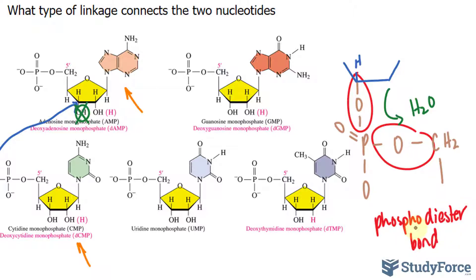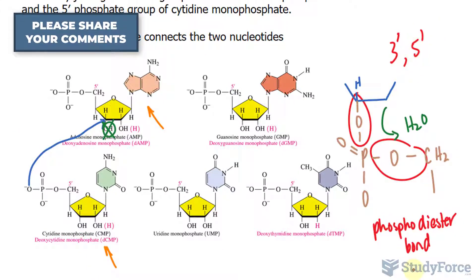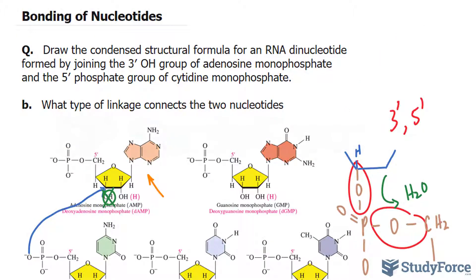And we also need to take into account the location. So it was at the third carbon. So 3 prime, 5 prime, phosphodiester bond. And there you have it. A quick discussion on the bonding of nucleotides.